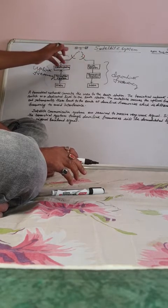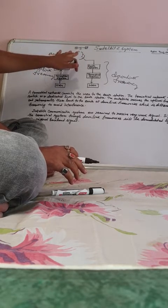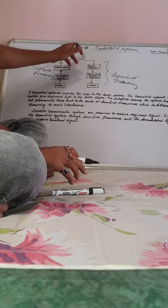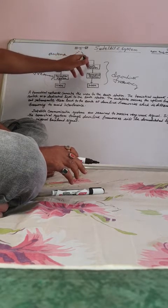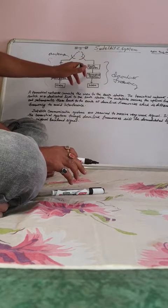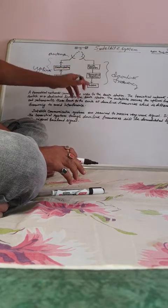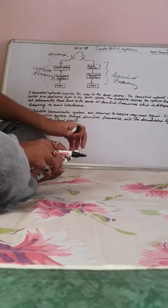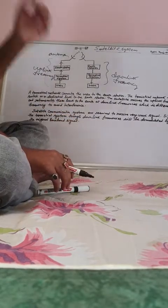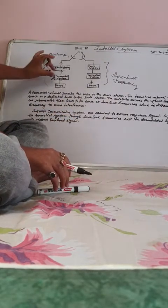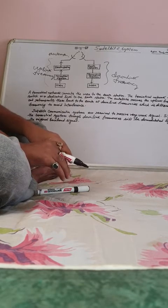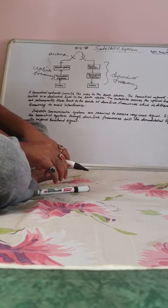Now the receiving antenna — between the transmitting and the receiving antenna there is a satellite. The receiving antenna is connected with the same earth station, terrestrial system, and user. The terrestrial network connects the user to the earth station. The terrestrial network may be a telephone or dedicated link to the earth station.